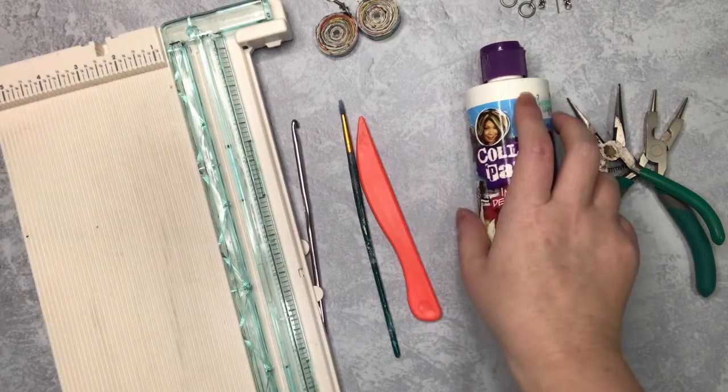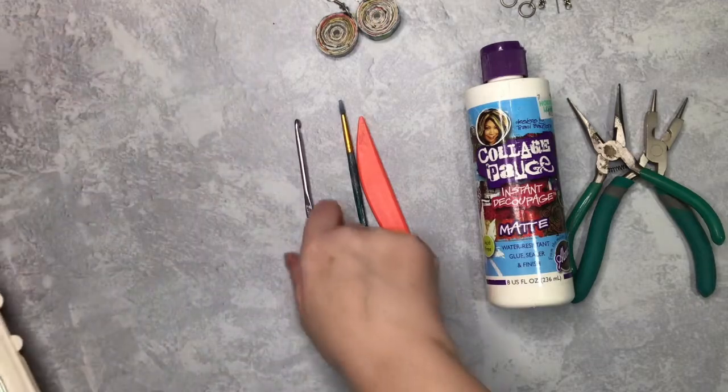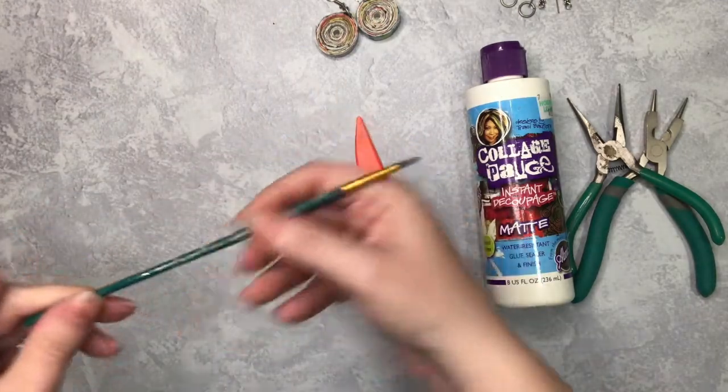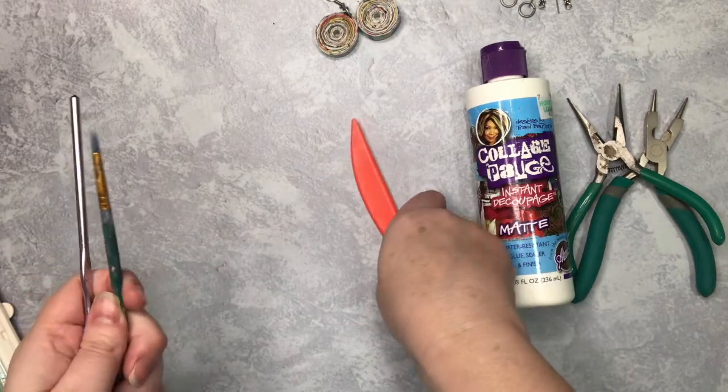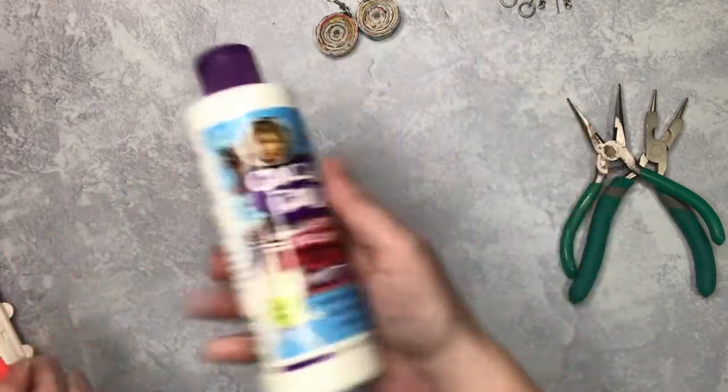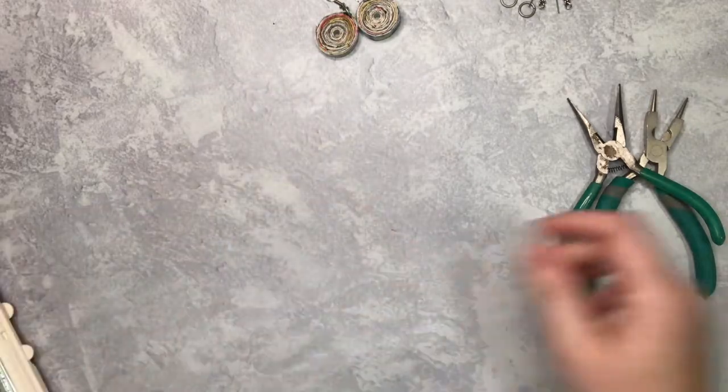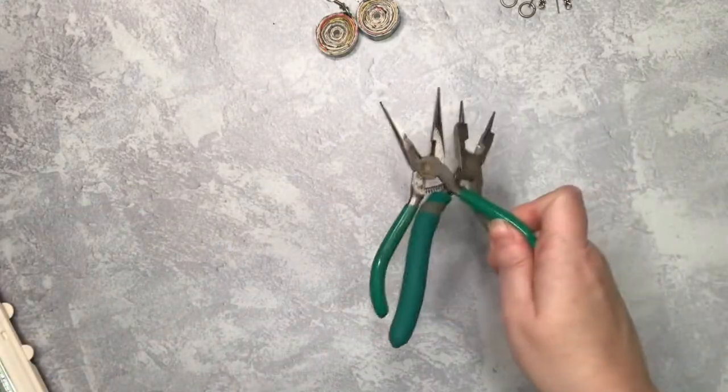Now for this project you're going to need some old magazines, a paper cutter, a crochet hook or something that's round that doesn't taper and change shapes like a paintbrush. You'll also need a paintbrush, a bone folder, some decoupage glue, some jewelry pliers, and then a jump ring and some earring hardware.